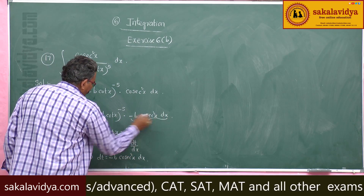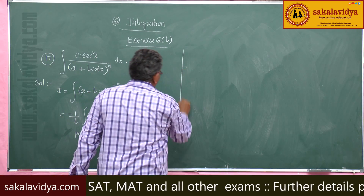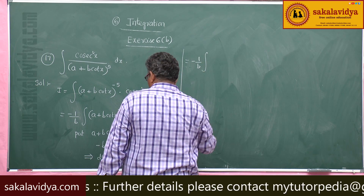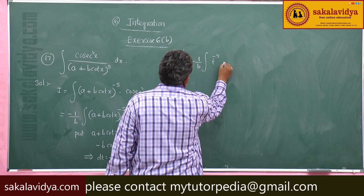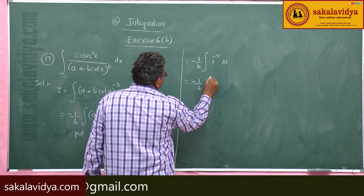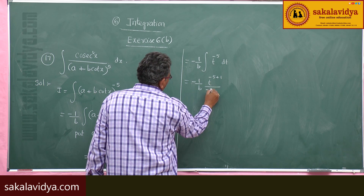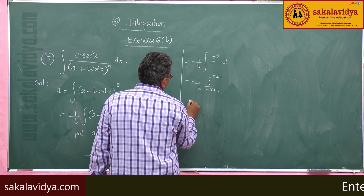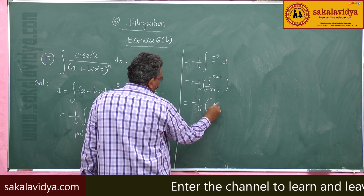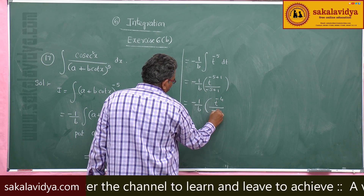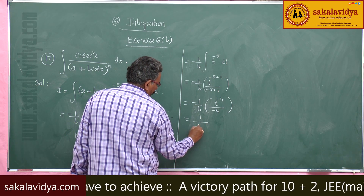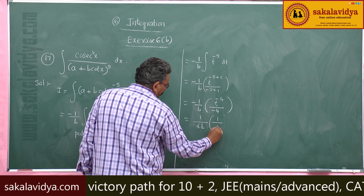Substituting, this becomes minus 1 over b times the integral of t to the power of minus 5 dt. Integrating: minus 1 over b times t to the power of minus 5 plus 1, divided by minus 4, which we write as minus 1 over b times t to the power of minus 4 over minus 4. The negatives cancel to give 1 over (4b) times 1 over t to the power of 4.